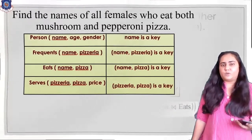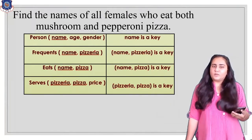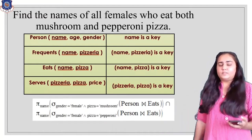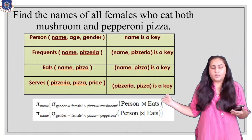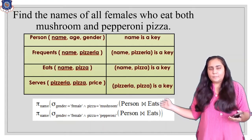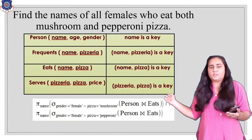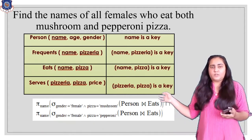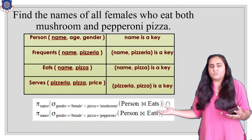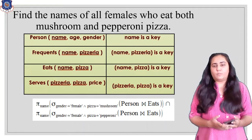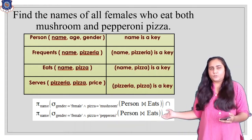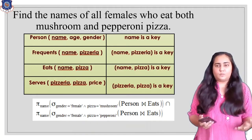For the query finding females who eat both mushroom AND pepperoni, we must use intersection. The first query finds names of females eating mushroom pizza: natural join of person and eats, filter with gender = 'female' AND pizza = 'mushroom', then project name. The second query does the same but with pizza = 'pepperoni'. Taking the intersection between these two gives the names of females who eat mushroom as well as pepperoni pizza.